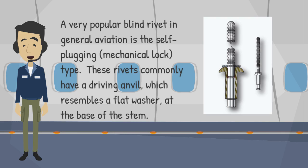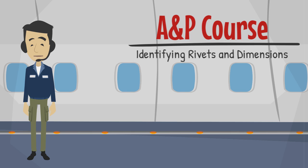These rivets commonly have a driving anvil, which resembles a flat washer, at the base of the stem. This concludes this training session. We hope you found it useful.